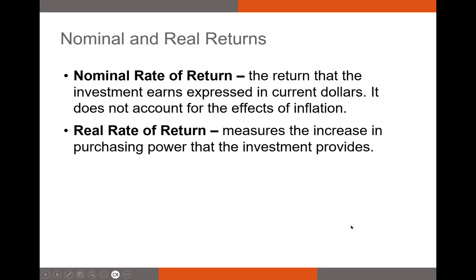Now let's talk about nominal versus real returns. A nominal return is the return reported in the press — almost every return you've heard of is a nominal return. It's expressed in current dollars and doesn't account for the effects of inflation. A real return, on the other hand, is the return adjusted for the change in total purchasing power — a nominal return adjusted for inflation — and it's our best metric for how purchasing power changed.